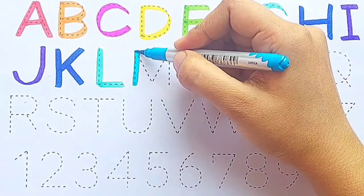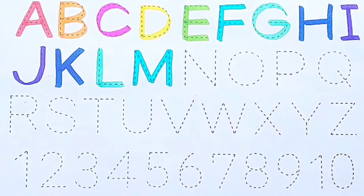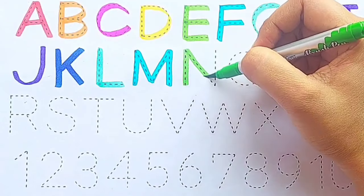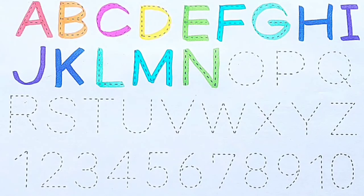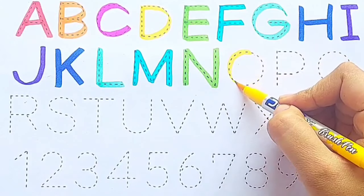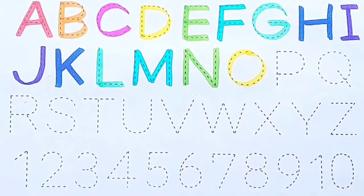Sky blue color. M, M for monkey. Light green color. N, N for nest. Yellow color. O, O for owl.